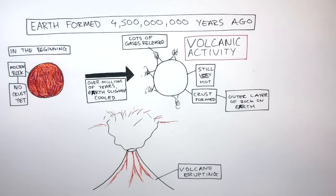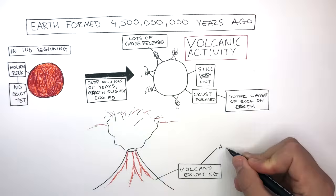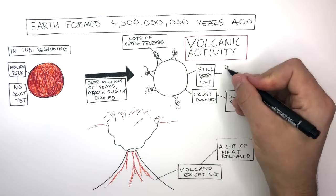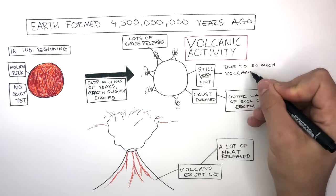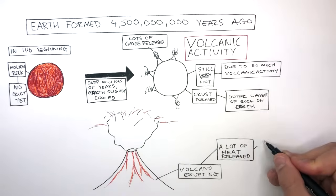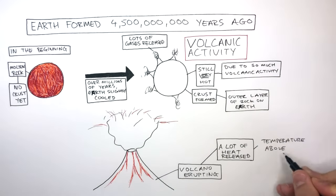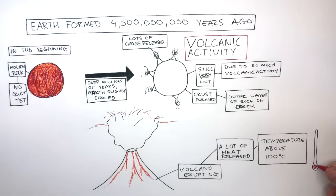The hot lava and hot gases from all this volcanic activity meant a lot of heat was released. Due to so much volcanic activity around the world, the temperature would have been above 100 degrees Celsius. This was way too hot to sustain any life.